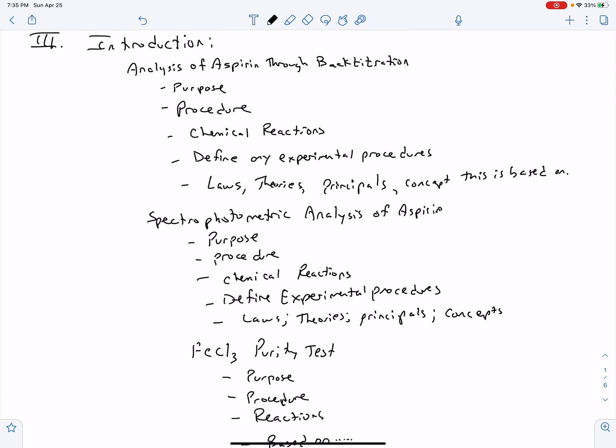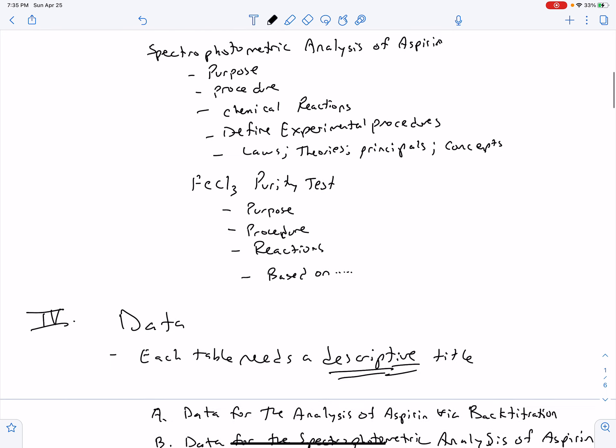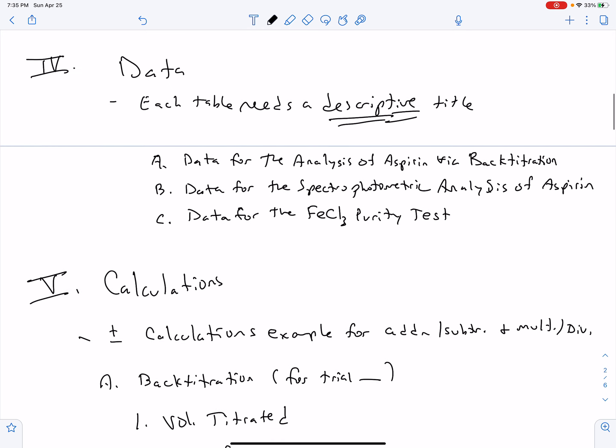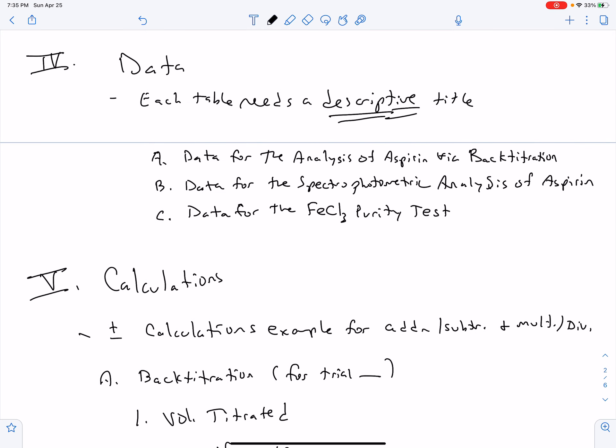Finally we get to the last few portions. We had our title page, our introduction. Feel free to stop the video at any point if you need to write things down. We have some data tables. Each data table needs a descriptive title. As far as I can see, there are three sets of data. First is that data table for the analysis of aspirin through back titration. The only two things I noticed that needed to be added to that table, or at least come from that table, were the percent error and relative error. Those weren't on the table, but they are things you will need to calculate.